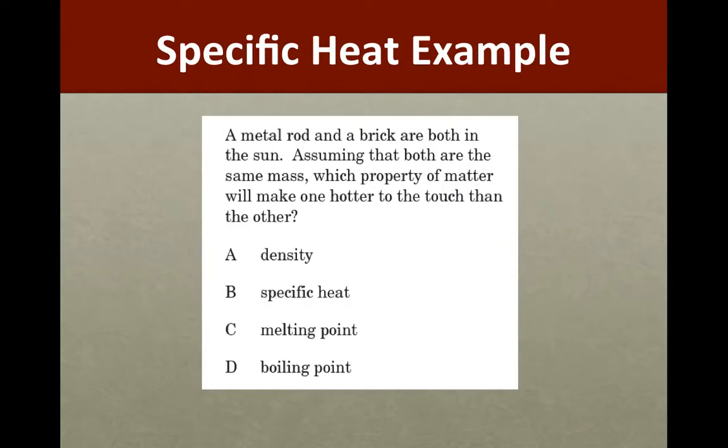Here's an example of a heat problem. A metal rod and a brick are both in the sun. Assuming both are the same mass, which property of matter will make one hotter to touch than the other? Would it be its density, its specific heat, its melting point, or boiling point? Think about it. The property is what we're looking at. A property of matter that's unique to each would be its specific heat.